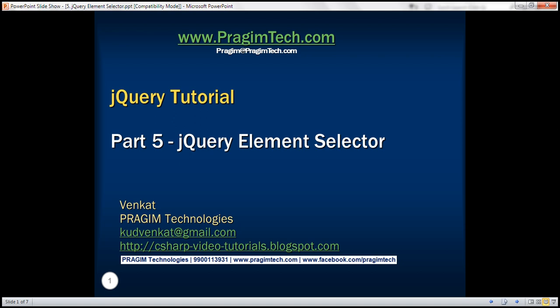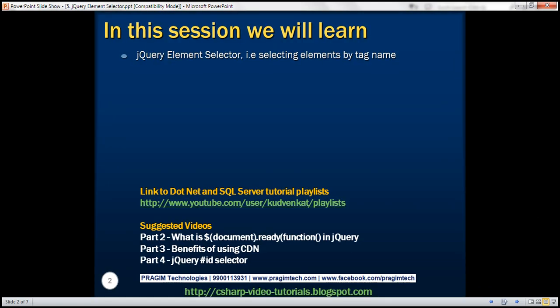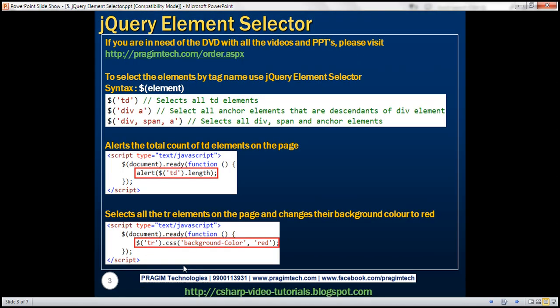This is part 5 of the jQuery tutorial. In this video, we'll discuss the jQuery element selector, that is, selecting elements by tag name. This is a continuation of part 4, so please watch part 4 before proceeding. To select elements by tag name, we use the jQuery element selector.